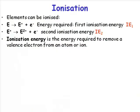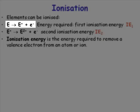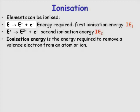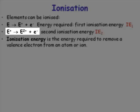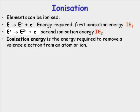Now let's talk about another property: ionization energy. The first ionization energy is the energy required to remove an electron from a gas phase atom. The second ionization energy would be the energy required to remove an electron from a monocation in the gas phase.